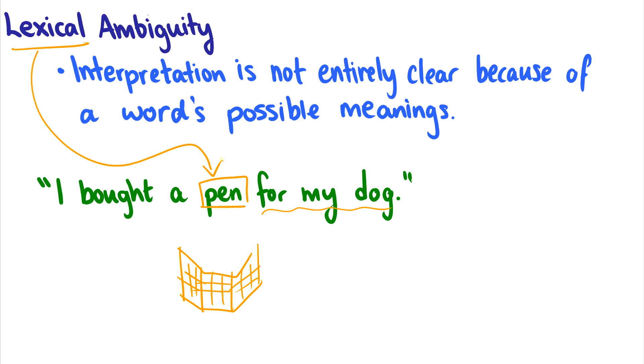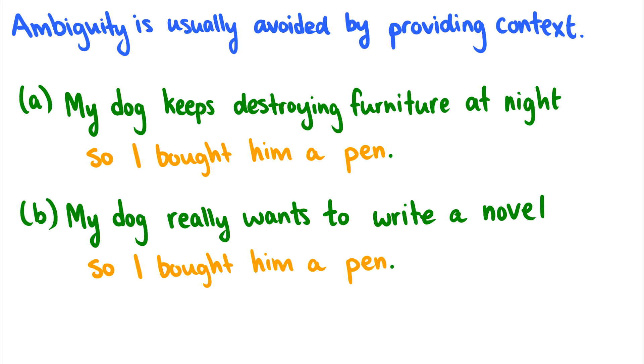We can normally avoid this by providing context. So for instance, if we say, my dog keeps destroying furniture at night, so I bought him a pen. Then when you get to this word pen, when you read these sentences or are listening to a speaker, you're not confused because the context makes it very clear which type of pen we're talking about. Compare it to the second sentence, my dog really wants to write a novel. So I bought him a pen. Now it's really clear which pen this is and the sentence makes sense. But you may be thinking, what do you mean your dog really wants to write a novel? That's weird. Your dog can't want to write a novel. But giving a context can avoid lexical ambiguity.